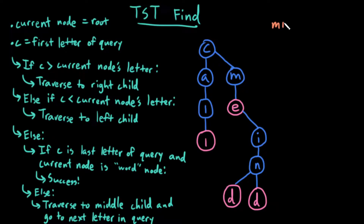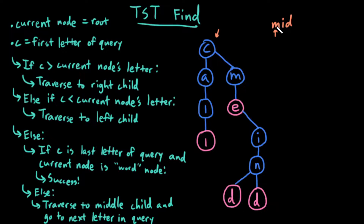Let's start with the word 'mid'. Let's try to find the word 'mid' in this ternary search tree. My current node starts at the root, and my current letter starts as the first letter of my query. Now I keep looping — if the current letter is greater than the current node's letter, so if m is greater than c, yes that's true, traverse to the right child. So I go right.